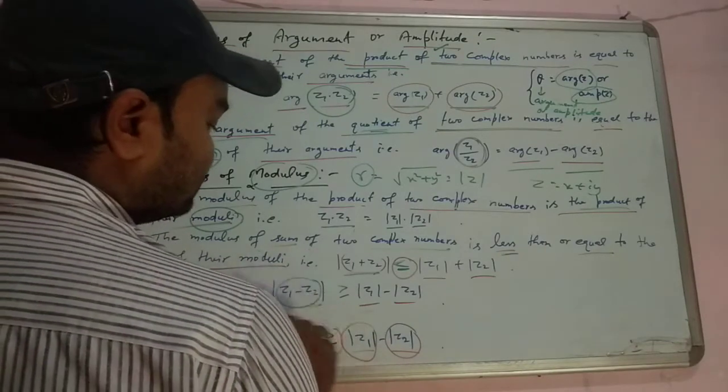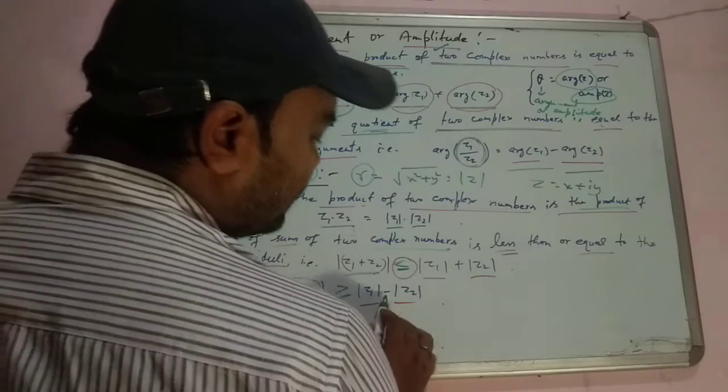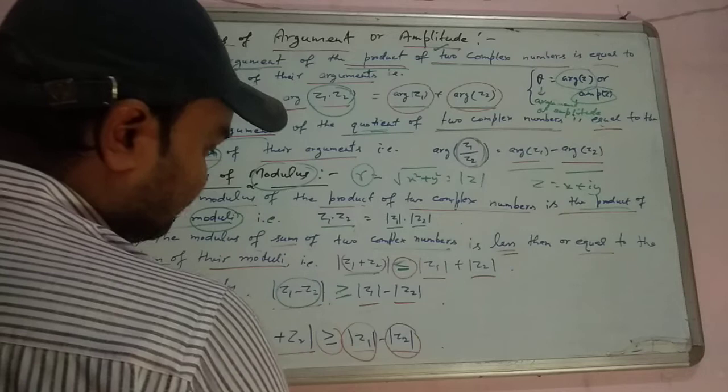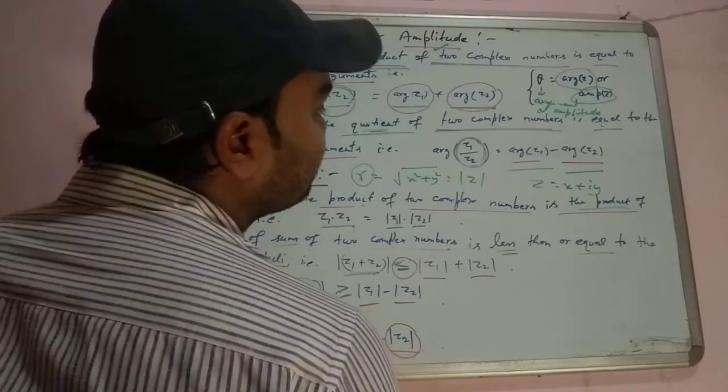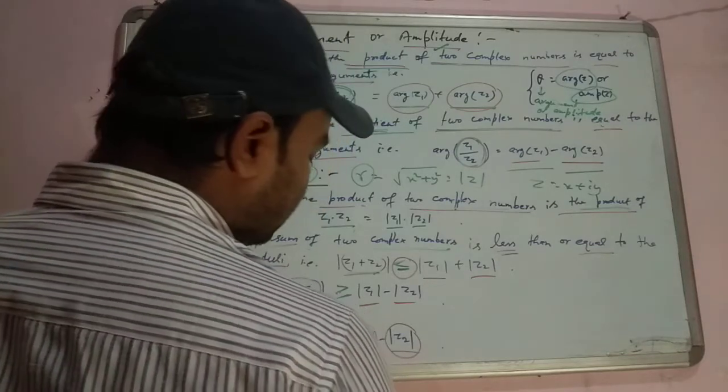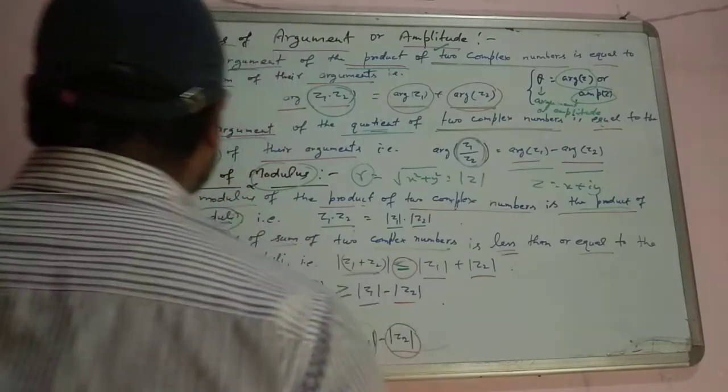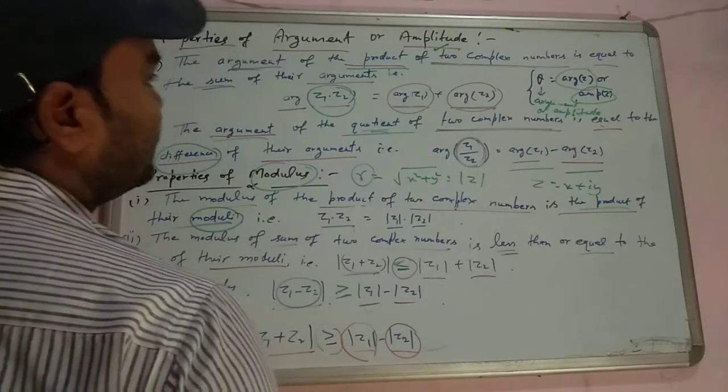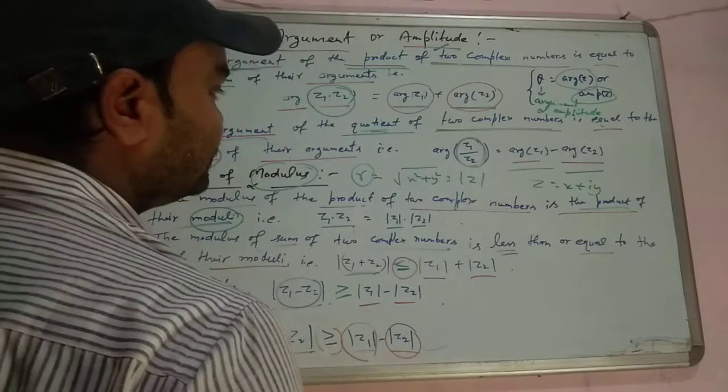This mod is greater than or equal to mod of z1 minus mod of z2. Also another property is mod of z1 plus z2 is greater than or equal to mod of z1 minus mod of z2. These four properties are very important, similarly to the first and second property of argument and amplitude.